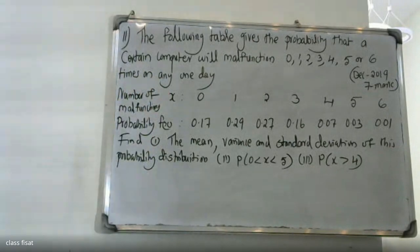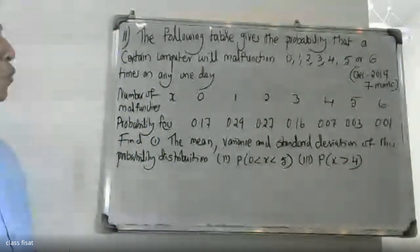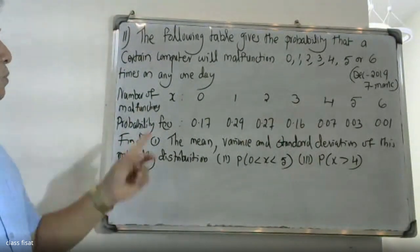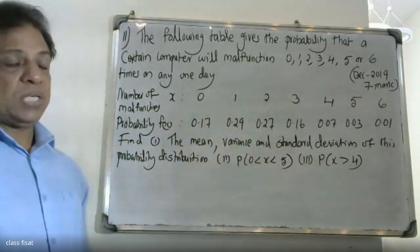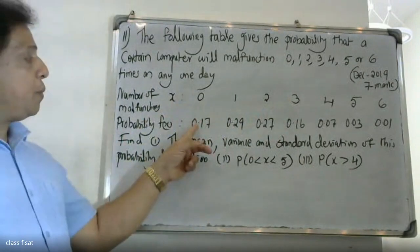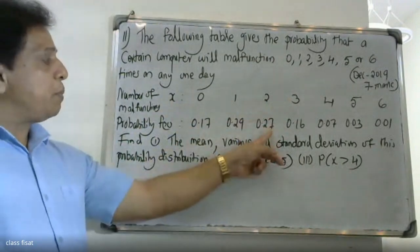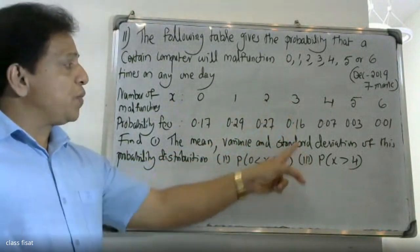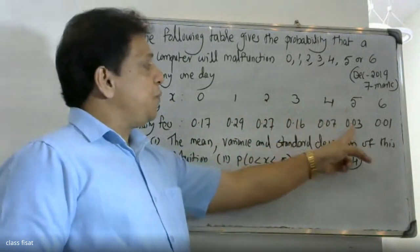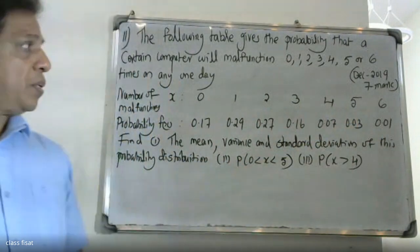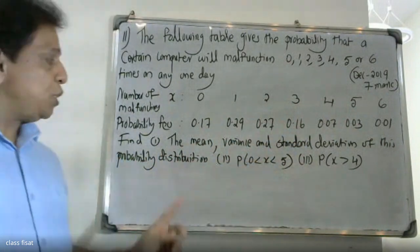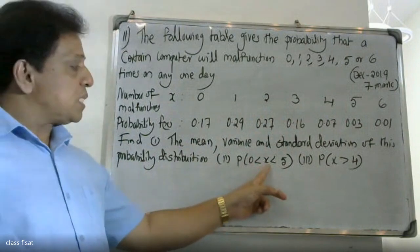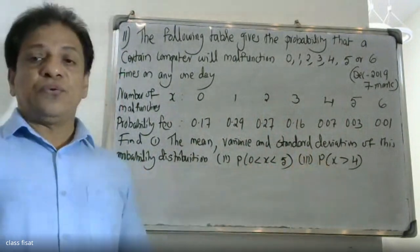The following table gives the probability that a certain computer will have 0, 1, 2, 3, 4, 5, or 6 malfunctions in one day. The number of malfunctions x: 0, 1, 2, 3, 4, 5, 6 with corresponding probabilities 0.17, 0.29, 0.27, 0.16, 0.07, 0.03, 0.01. Find: the probability distribution, and the probability of x greater than 4.